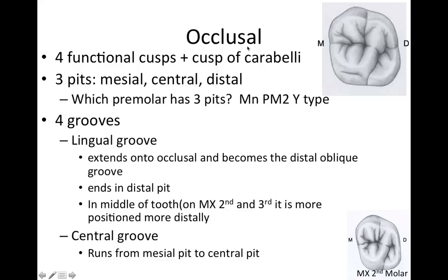Looking at the occlusal now: there are four functional cusps plus a cusp of Carabelli, three pits — a mesial, a central, and a distal — and four grooves. You might wonder if you really need to know all this, but yes, I'd know it. I got burned on one of these questions on my test. Also worth noting: which premolar has three pits? That's going to be the mandibular second premolar, Y-type.